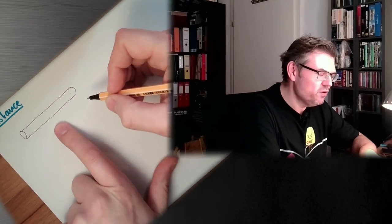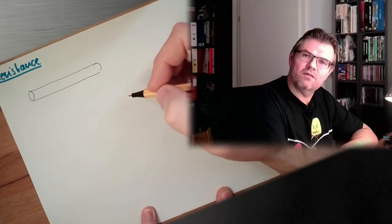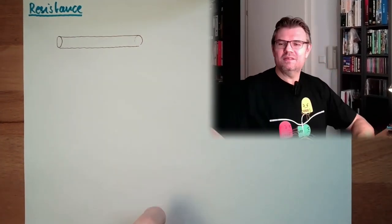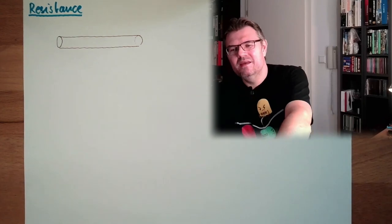Well, let's assume we have a piece of conductive material. Here it is. And then we have a certain resistance. We said, okay, we can measure this and so on. We have a certain resistance at this length of this and we are fine. From what is this resistance depending? Let's have a look.